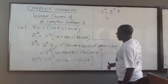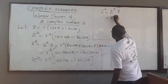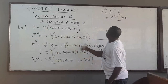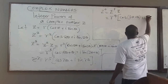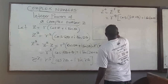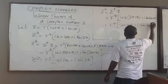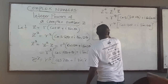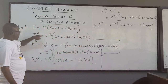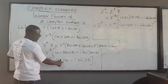For z⁴, that equals r³ multiplied by r, giving r⁴, times cos(3θ + θ) + i sin(3θ + θ), which is r⁴(cos 4θ + i sin 4θ). So the relationship being developed is: z² → r², cos 2θ, sin 2θ; z³ → r³, cos 3θ, sin 3θ; z⁴ → r⁴, cos 4θ, sin 4θ.